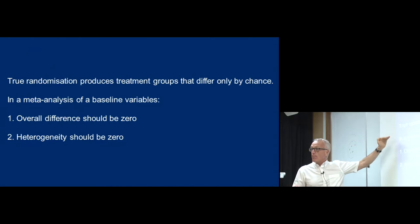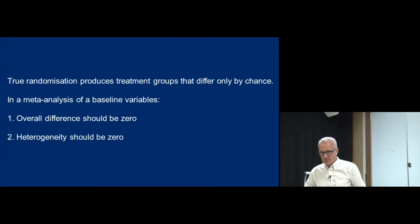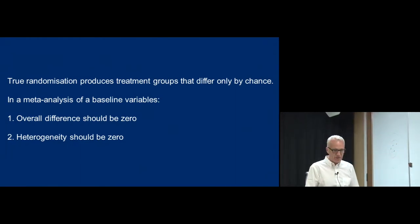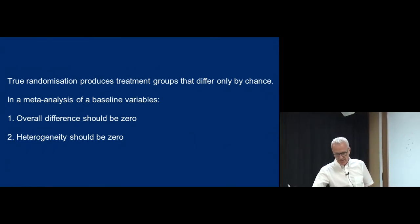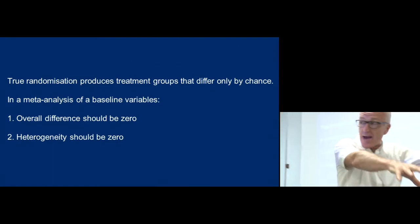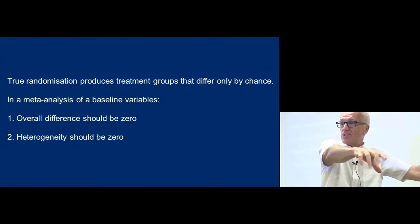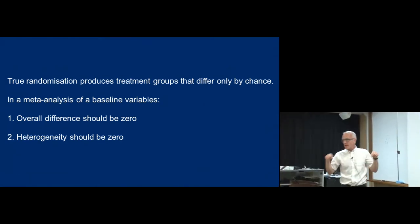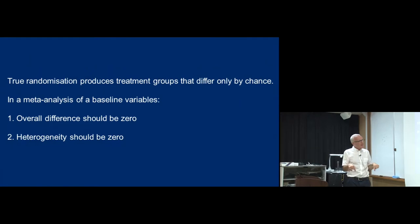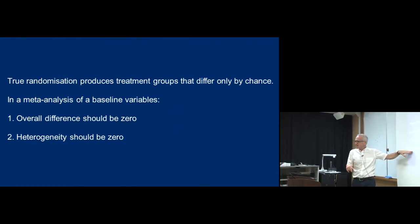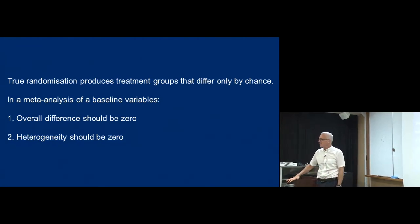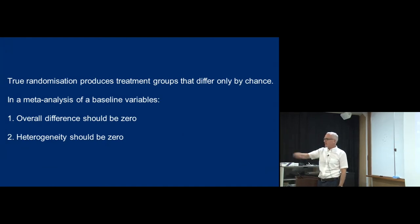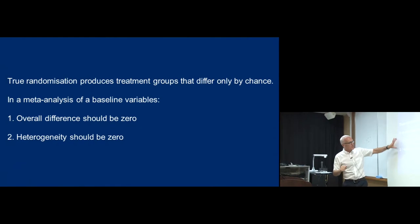Usually we do a meta-analysis of the outcome variables to see what effect the treatment had. But now we're doing a meta-analysis of the baseline variables. We shouldn't see any average difference, and we shouldn't see any heterogeneity over and above chance. Heterogeneity is variability over and above chance. You shouldn't see any overall difference and you shouldn't see any heterogeneity.